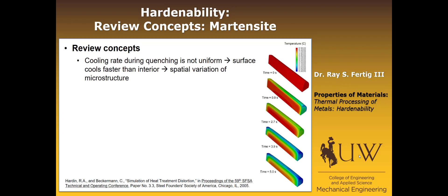If we quench a specimen — in this case a cylinder, looking at a cross-section — the cooling rate isn't going to be uniform. If you put a cylinder of steel into a bucket of water, the surface obviously cools faster than the interior. What that means is that you're going to have a spatial variation of microstructure. You can see the surface is cooling and it's slowly progressing to the inside of the cylinder, but because that cooling rate is slower, it's not going to necessarily form the same microstructure.